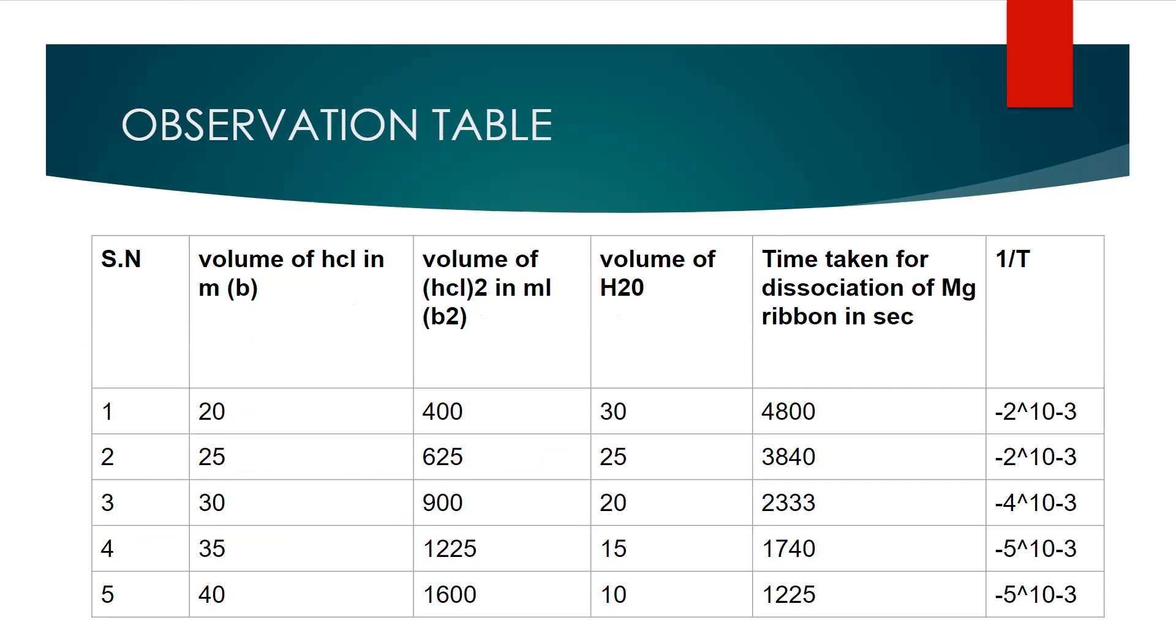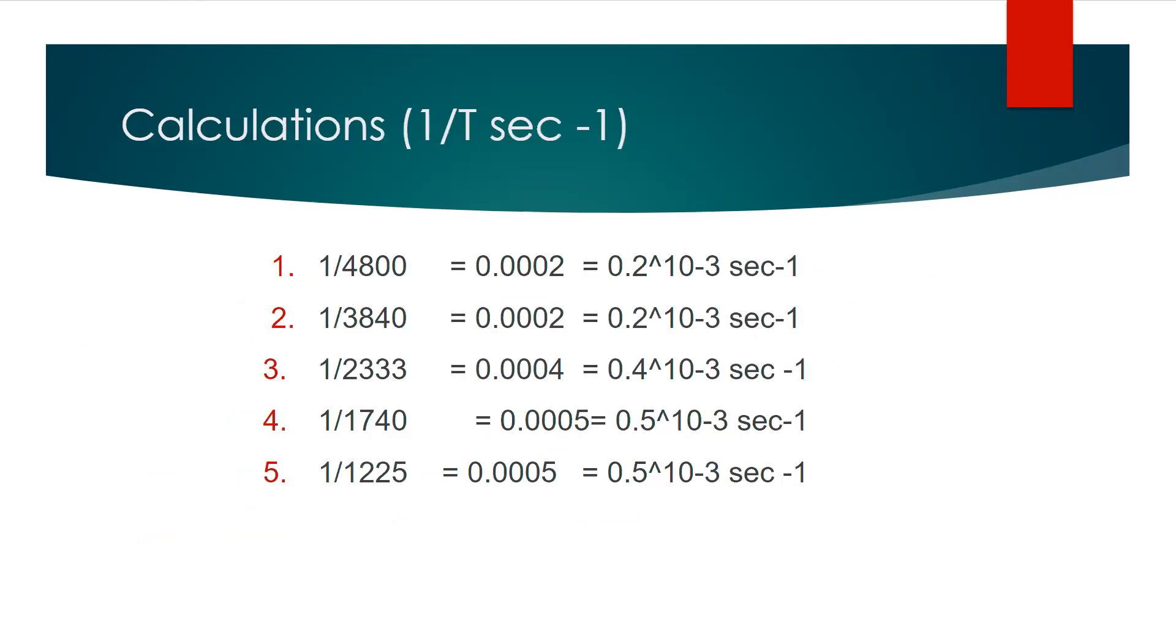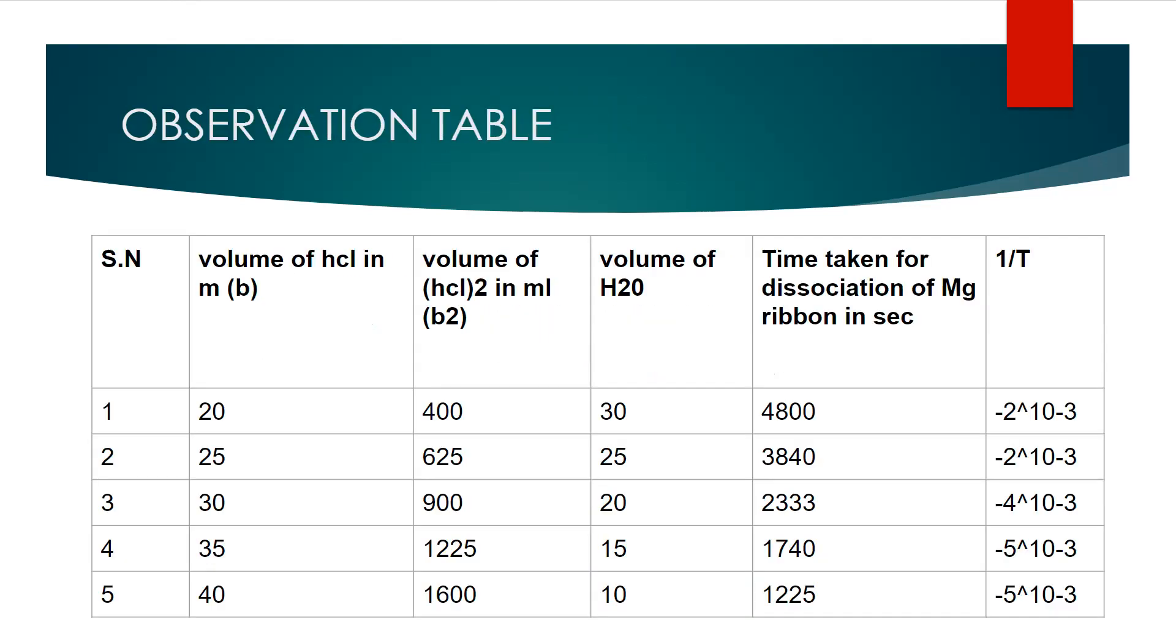So in calculation we are using a formula which is 1/t. By putting the value of time taken for dissociation of magnesium ribbon in seconds one by one we will get the answer.